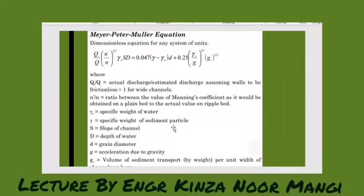S is the slope of the channel, D is the depth of the water, d is the grain diameter, g is the acceleration due to gravity, gs' is the volume of the sediment transport per unit width of the channel. So this is what we will find - gs is the bed width that we have to find, and we will see how this equation works. I have provided the usage of the equation also through problems.